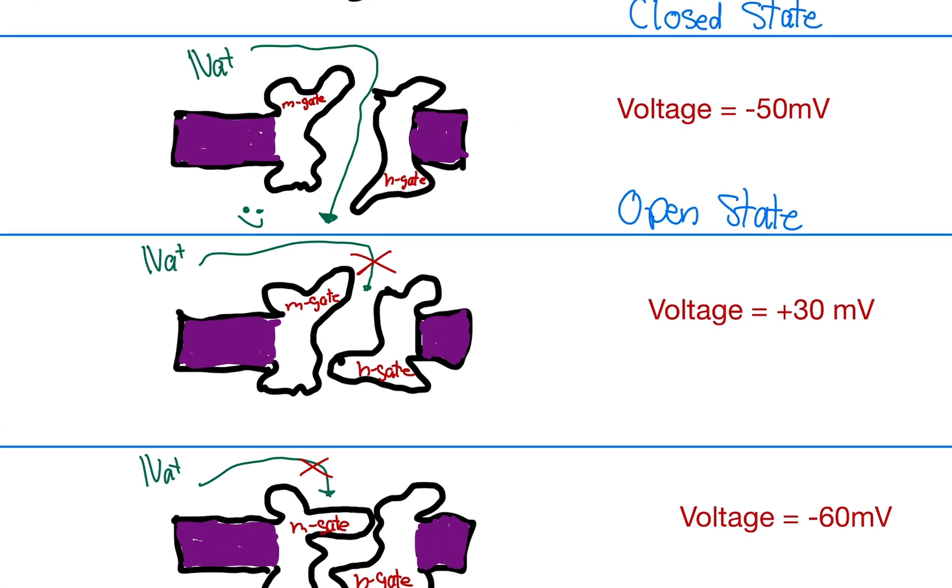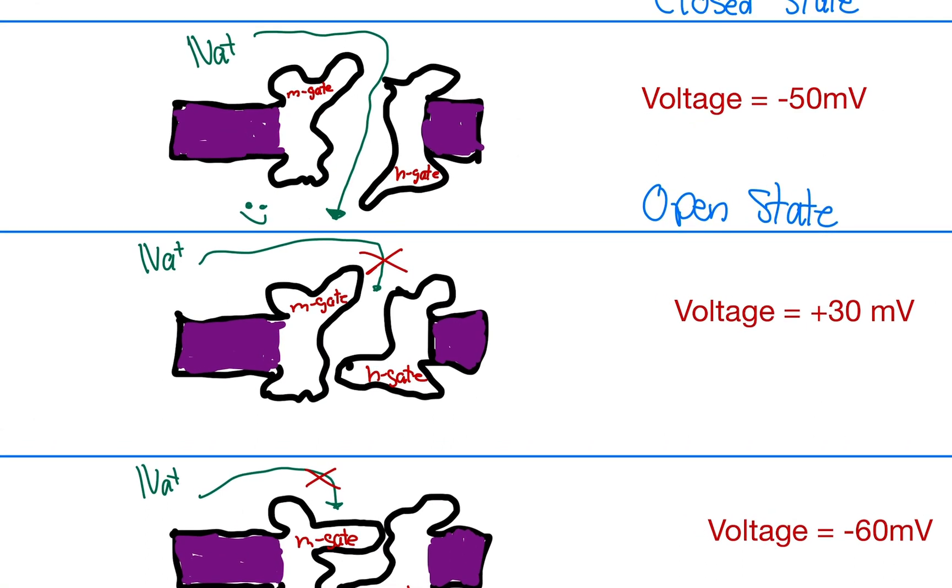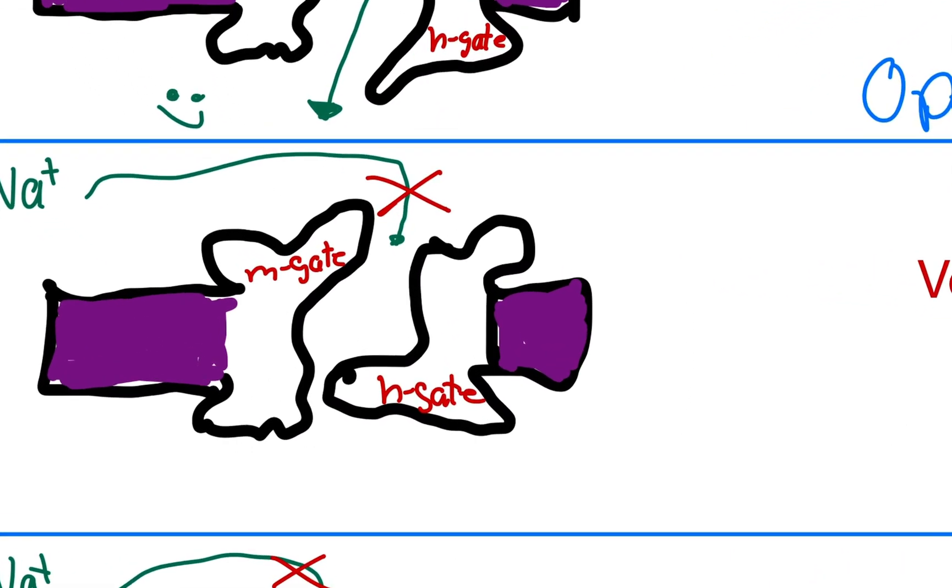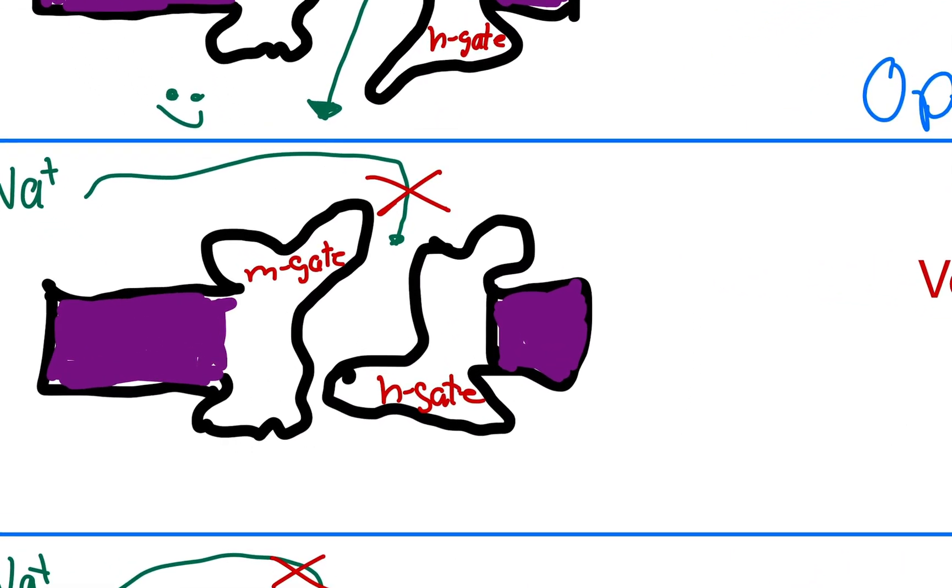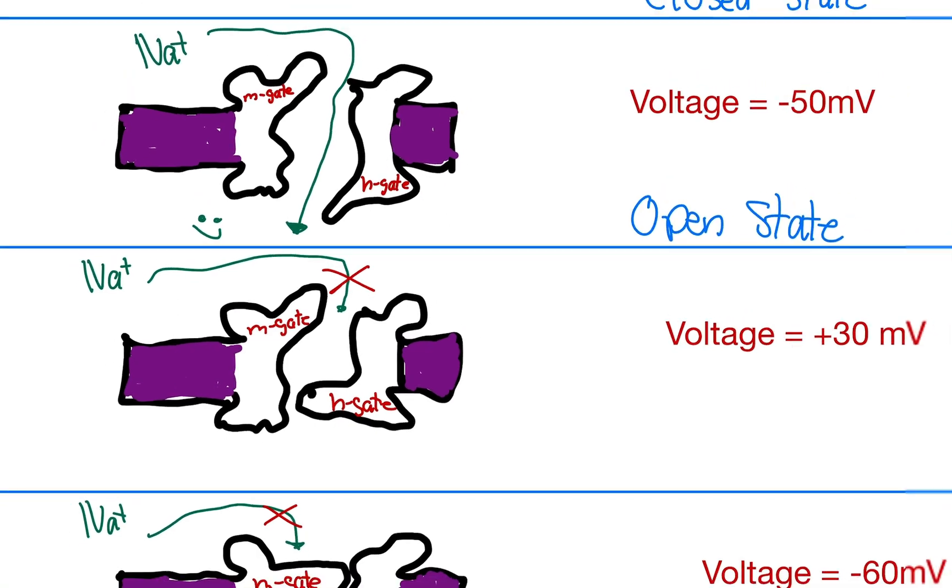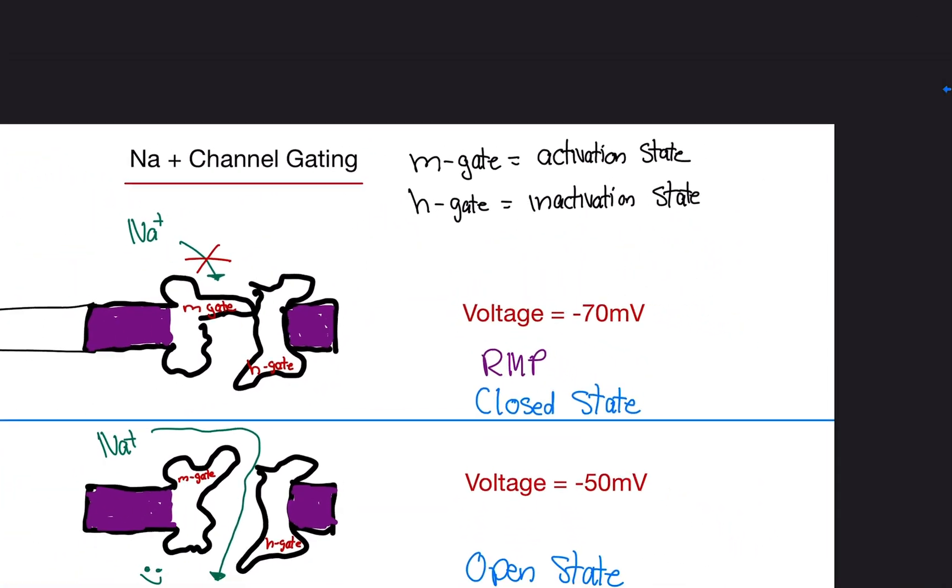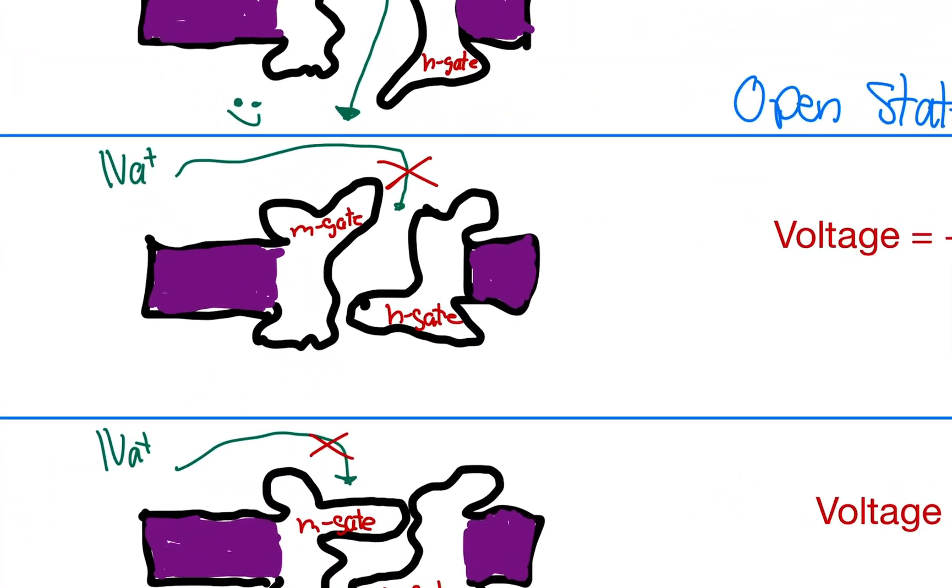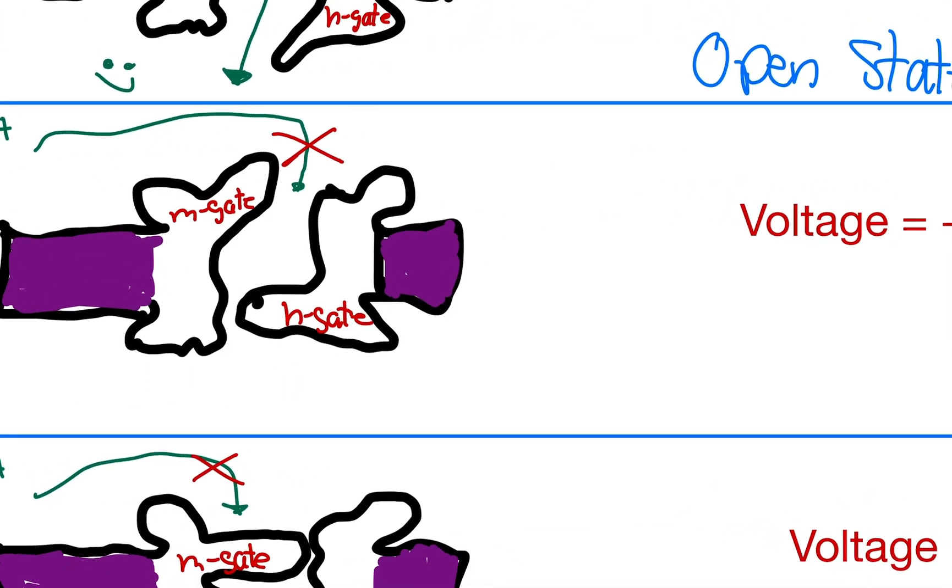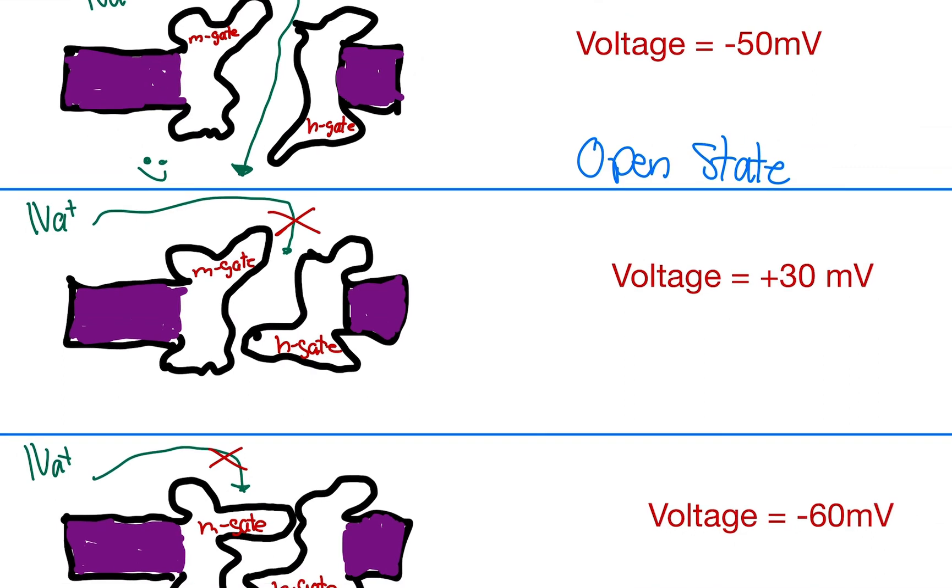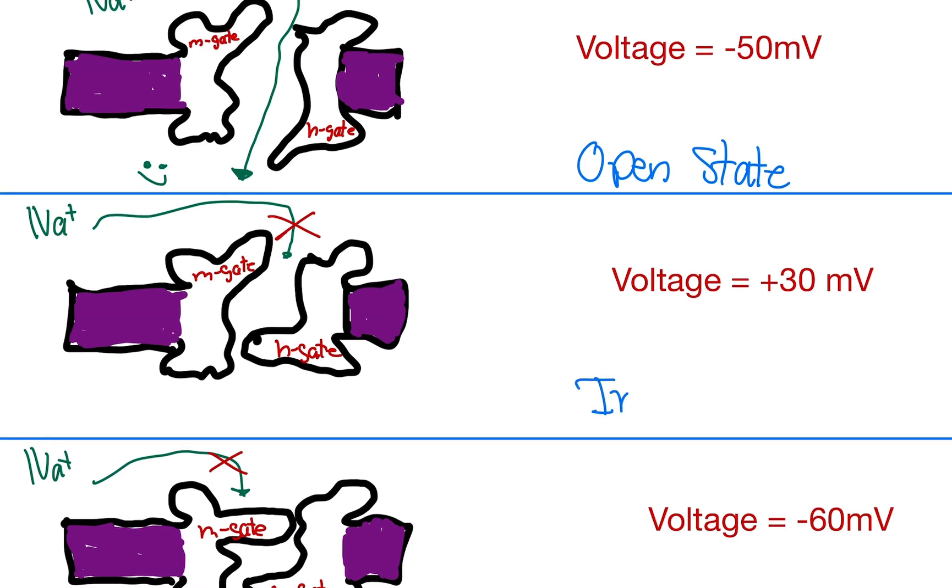Okay. If the voltage is at 30 millivolts, positive 30 millivolts, the M gate is open. So the activation gate is open. So now we look at the H gate. The H gate is closed. So the inactivation gate is closed. So if the inactivation gate is the only one that's closed, we call this the inactivated state.